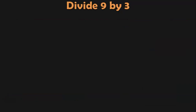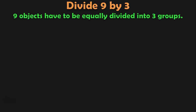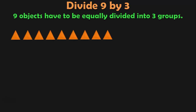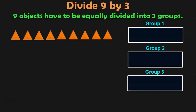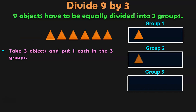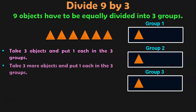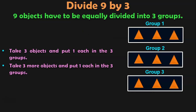The next sum is divide 9 by 3. 9 objects have to be equally divided into 3 groups. Here we have 9 triangles. Take 3 objects and put 1 each in the 3 groups. Then repeat: take 3 more objects and put 1 each in the 3 groups. We still have 3 more objects, so take those 3 objects and put 1 each in the 3 groups.